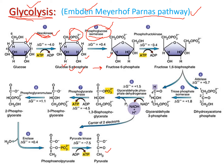The name phosphoglucoisomerase comes from its substrate glucose-6-phosphate, which has two functional groups: glucose and a phosphate group. Similarly, hexokinase is named because hexa means six — glucose is a six-membered ring with six carbons — and kinase refers to an enzyme that performs ATP hydrolysis.